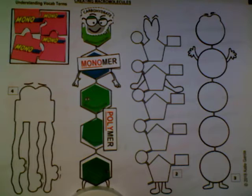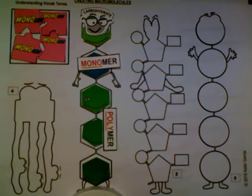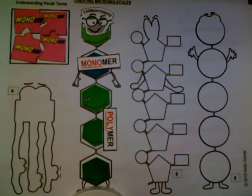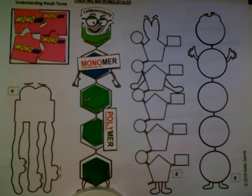Our next macromolecule — number two — is actually one that's not really considered to be one of our major nutrients, and it's a polymer we will be looking at in future units more so. And that is the polymer of nucleic acids. Some common nucleic acids are things like DNA and RNA, and the main job of those is going to be to provide us with our genetic code.